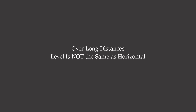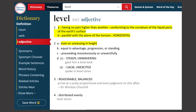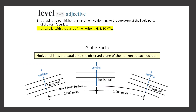But over long distances, level is not the same as horizontal. Here is a definition that supports that — level: having no part higher than another, conforming to the curvature of the liquid parts of the Earth's surface. Part B does say parallel with the plane of the horizon or horizontal, but this definition works on the globe Earth because at each location what the observer will see is horizontals that are perpendicular to the vertical at that location and horizontals that are parallel to the observed plane of the horizon.